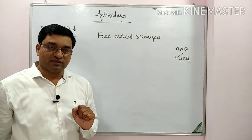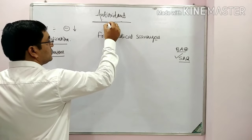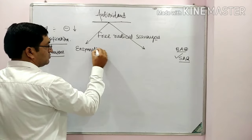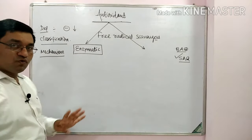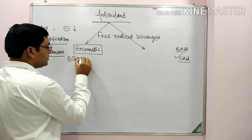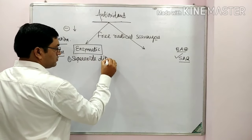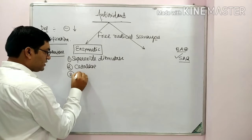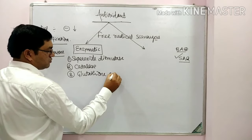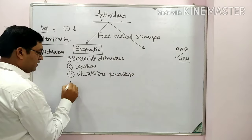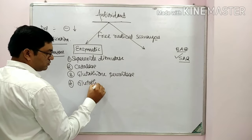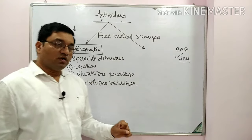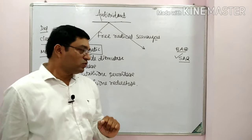Coming to the classification of antioxidants, there are two main types. The first one is the enzymatic antioxidant, which includes four main enzymes: superoxide dismutase, catalase, glutathione peroxidase, and glutathione reductase. These are the four enzymatic antioxidants — you may get a question to enumerate enzymatic antioxidants.